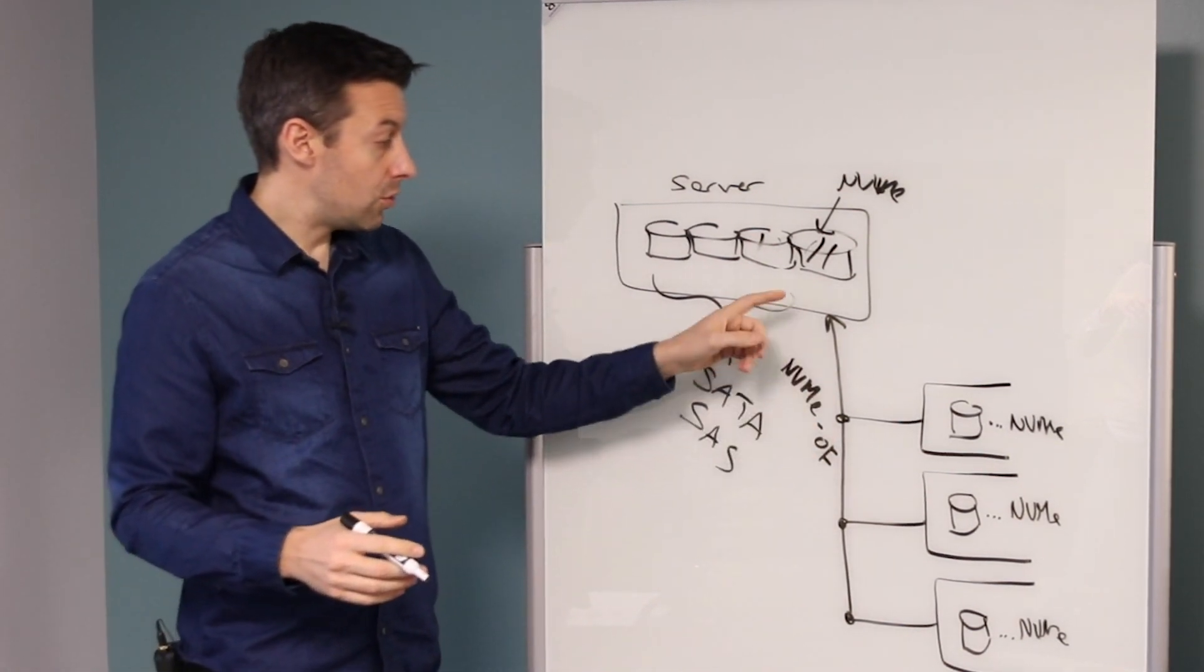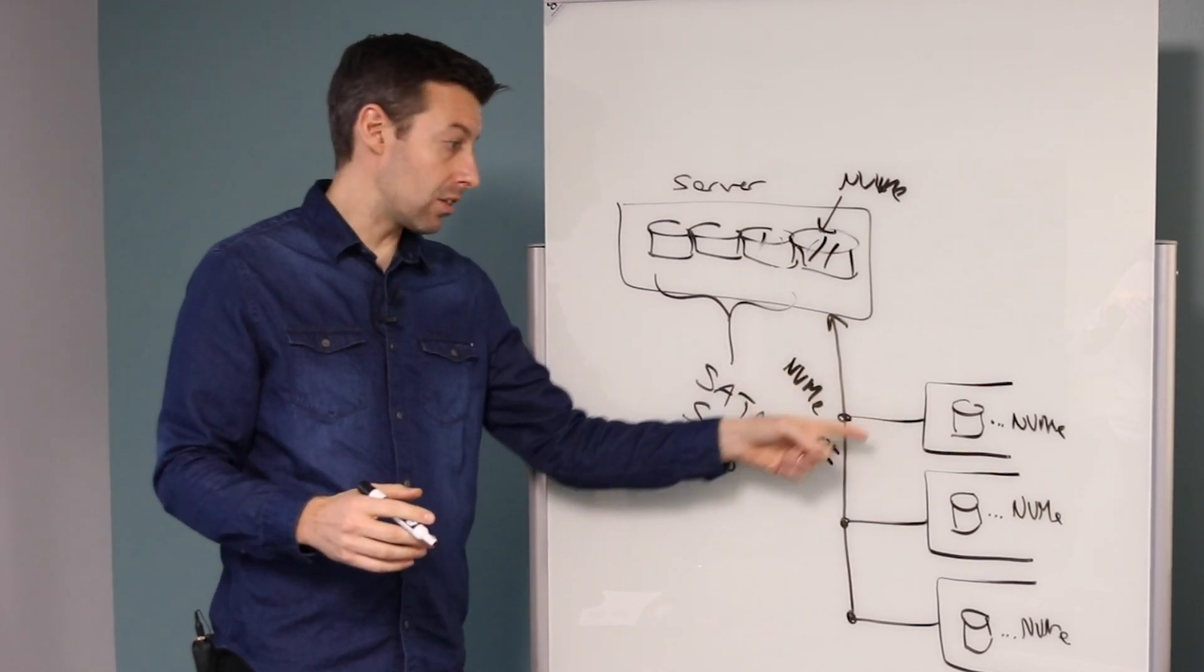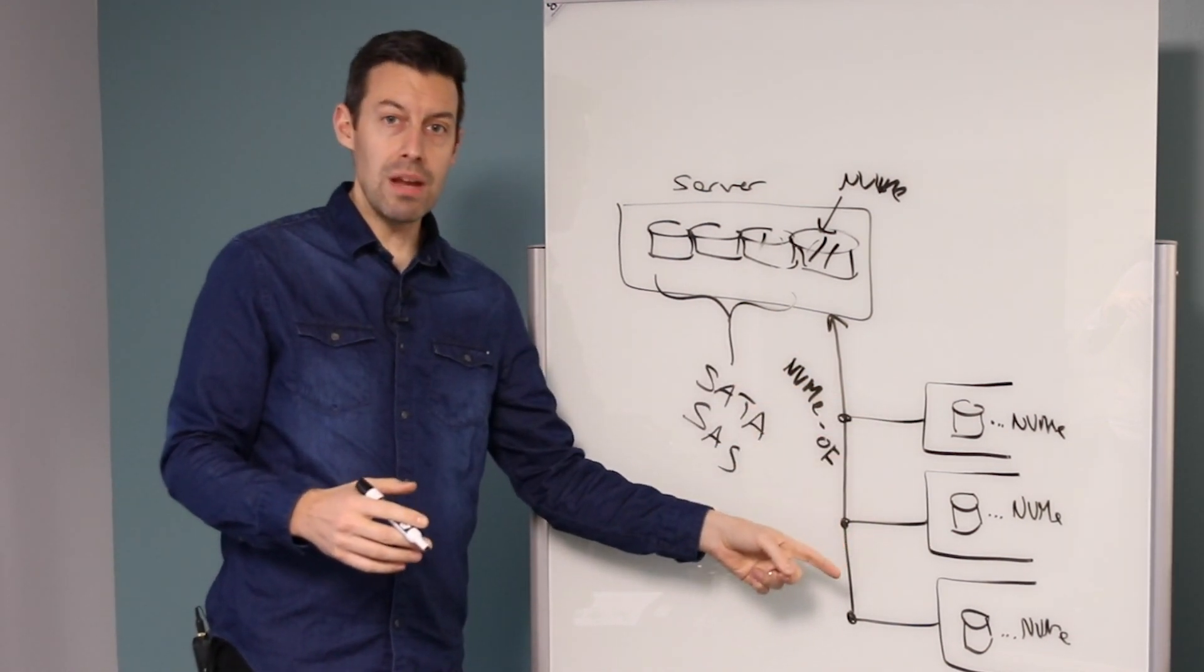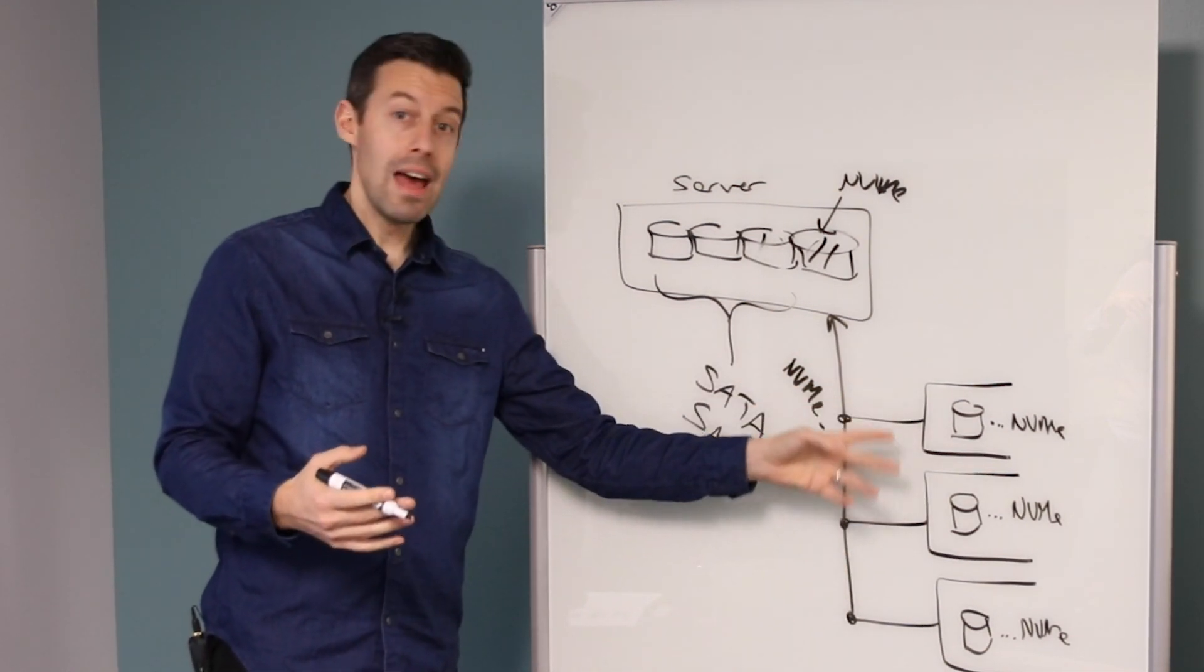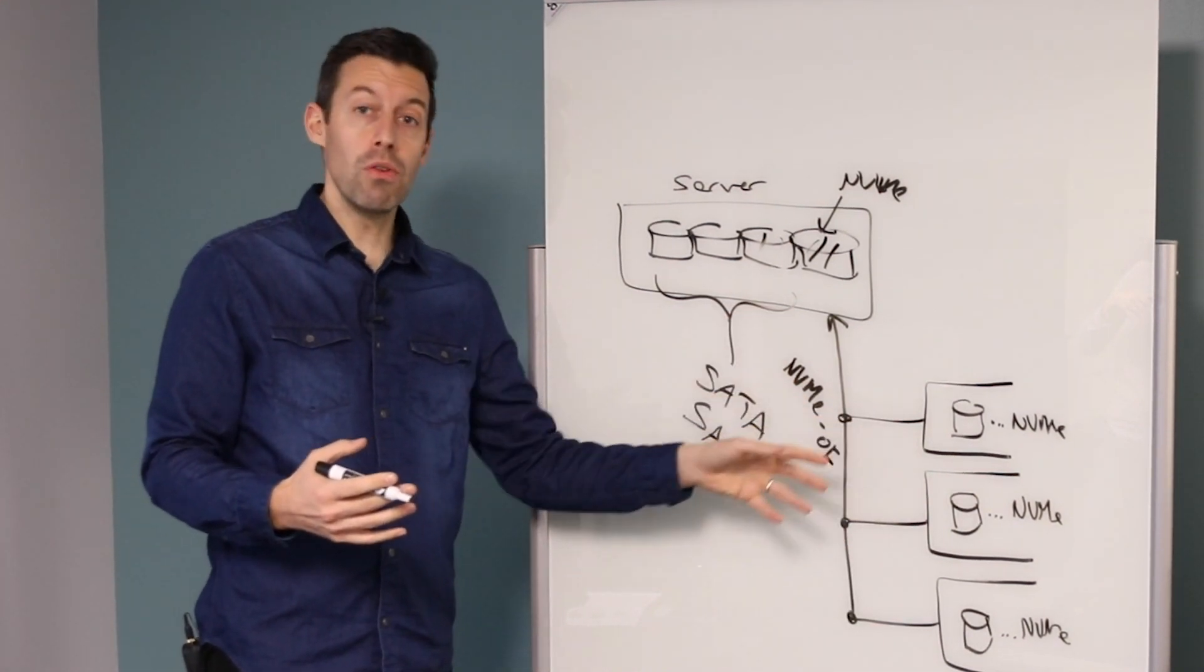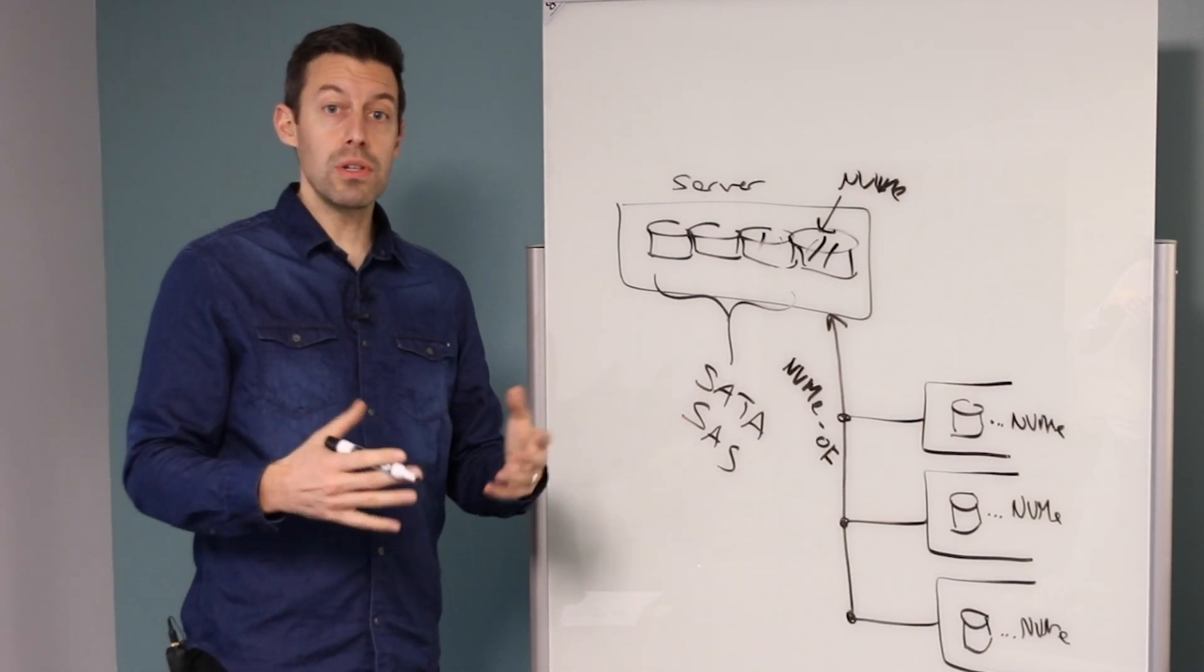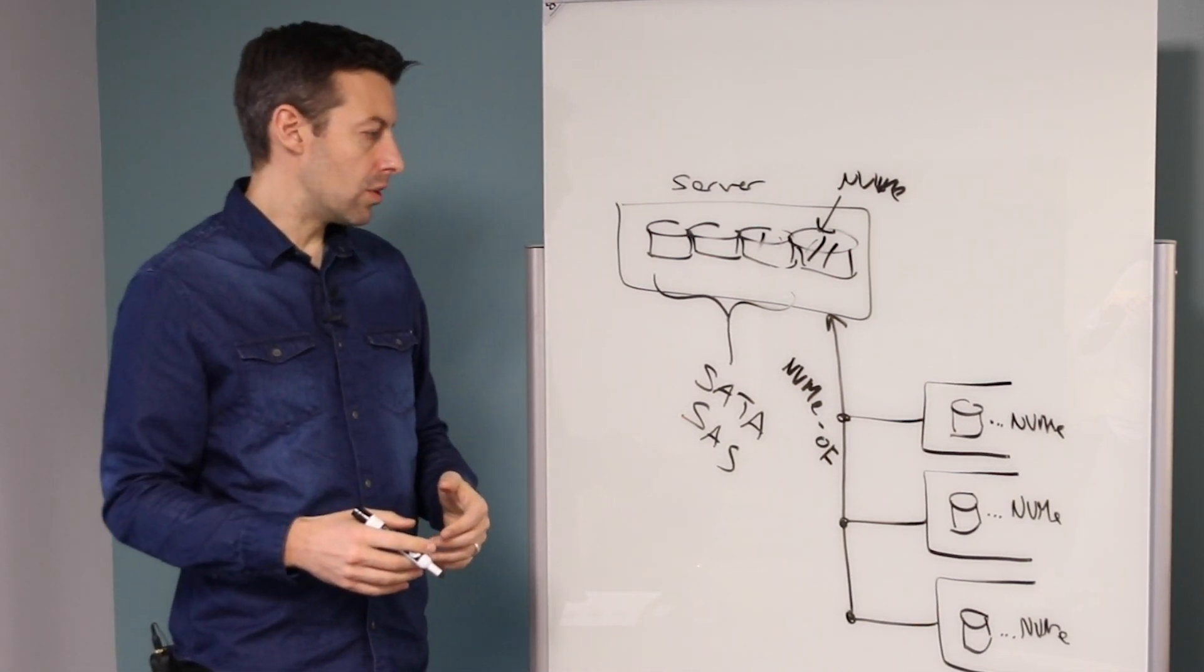And so what that would allow is you would have a high bandwidth, high throughput network connection to a set of JBOFs or storage appliances that again, had NVMe storage inside them, but you were able to connect them over the network. So that gave you a longer reach and also enabled you to expand the capacity of your storage network.